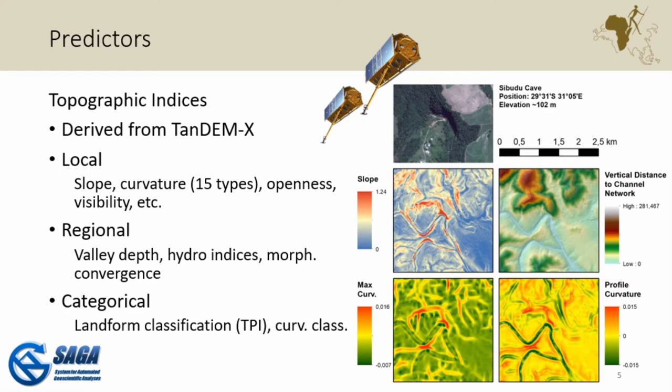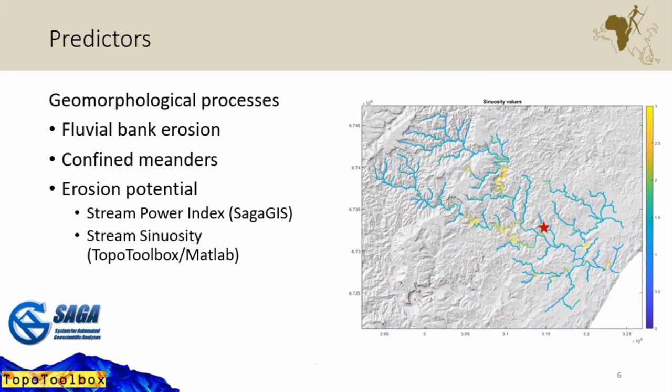We decided we needed more predictors and reconsidered our approach. We looked at the geomorphological processes that form these rock shelters — they are formed through fluvial bank erosion. An interesting feature is that these are confined meanders: they cannot roam freely but are bound to a course set before the Pleistocene. They incise vertically with only very low lateral variation.